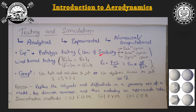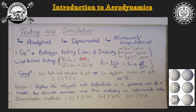Reynolds number and Euler's number are the two non-dimensional terms needed for our experiments. For wind tunnel testing of a prototype — we have a wind tunnel in our college — the Reynolds number of the model must equal the Reynolds number of the prototype, and the Euler's number of the model must equal that of the prototype, to satisfy dynamic similarity.